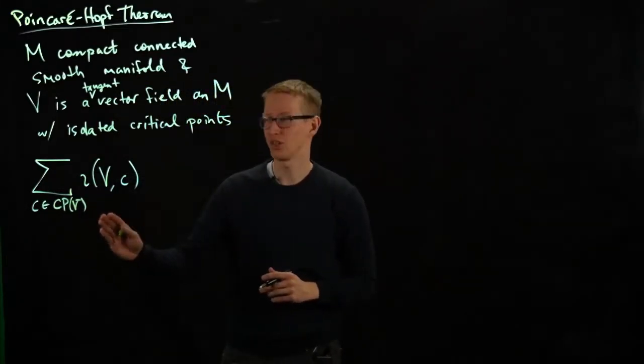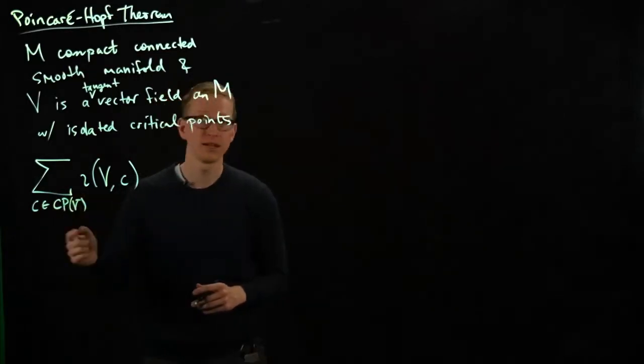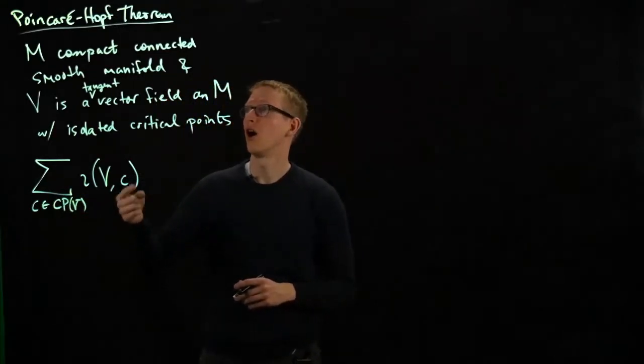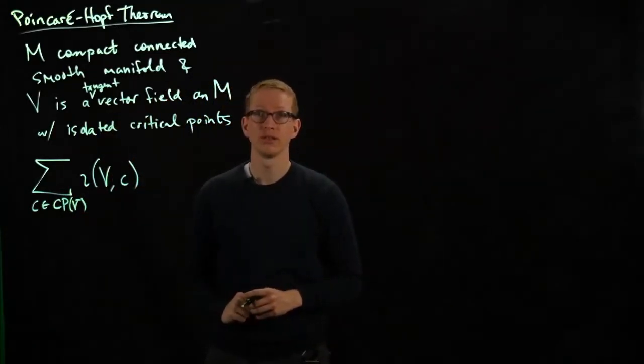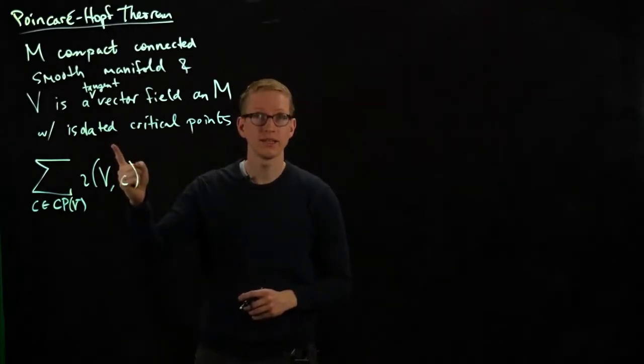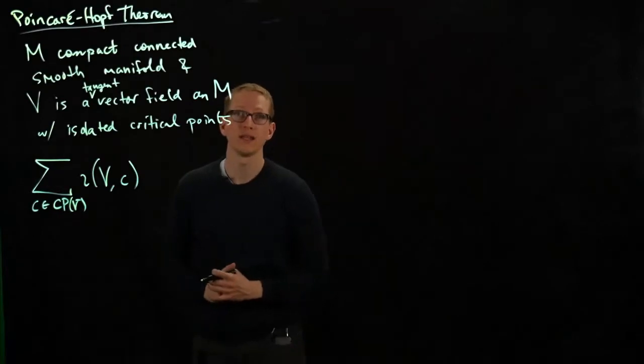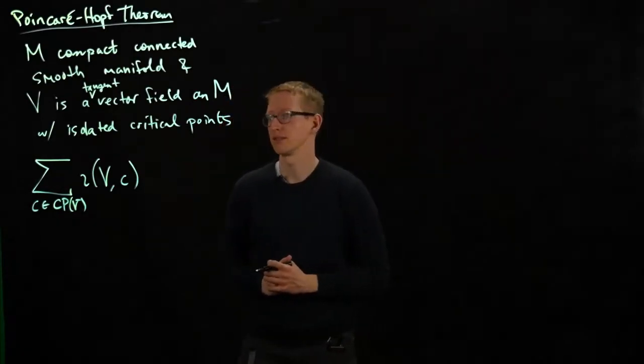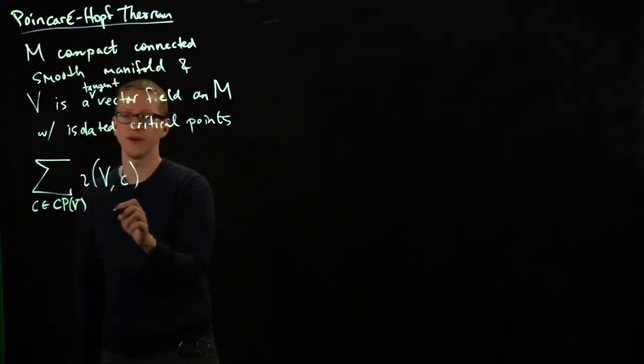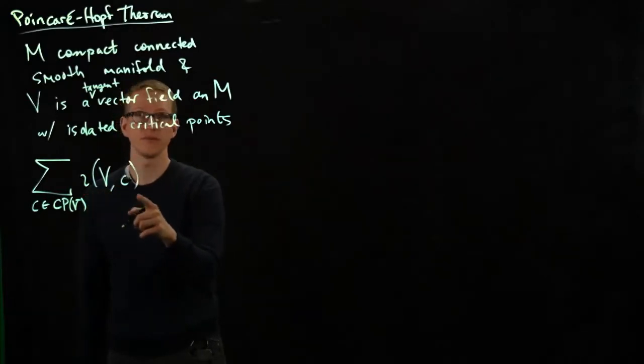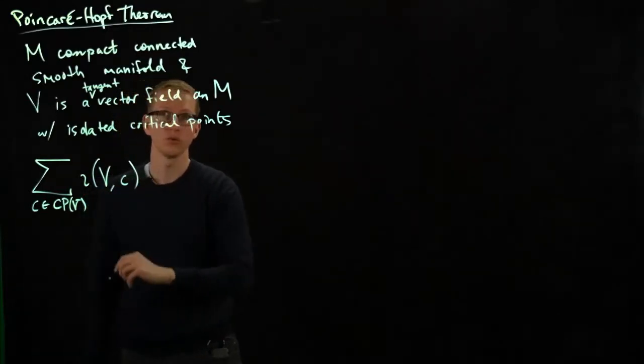There's a little bit of something to check here. The set of critical points on a compact manifold, because these are isolated, must be finite. And you should be able to prove that using the definition of compactness. So this is finite, and therefore the sum of these indices is well-defined.